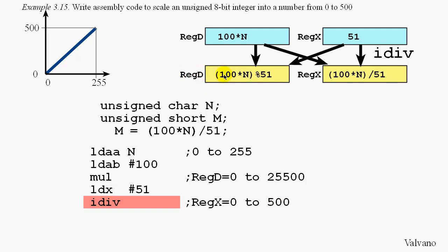Register d, by the way, would have gotten the remainder after that division. And the last step of this program is to store the result into M. And this program successfully converts the number N, which is 0 to 255, into the number M, which is 0 to 500.